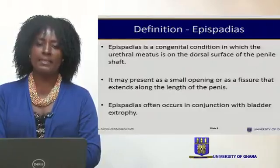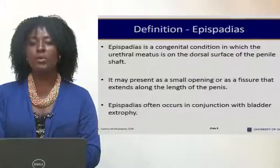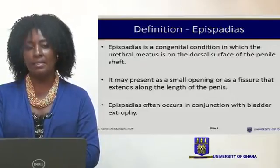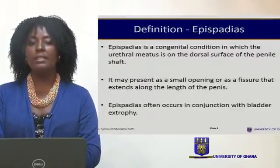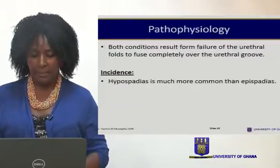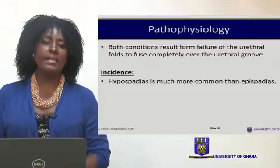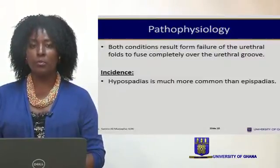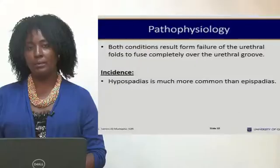Epispadias is the congenital anomaly where the urethral meatus opens on the dorsal surface of the penile shaft. There are also variations here, extending from a small opening or a fissure along the side of the penis. Epispadias also occurs in conjunction with bladder exstrophy, and bladder exstrophy then becomes a mild form of epispadias. By way of pathology, this usually occurs from failure of the urethral fold to fuse completely over the urethral groove. Hypospadias is more common than epispadias.